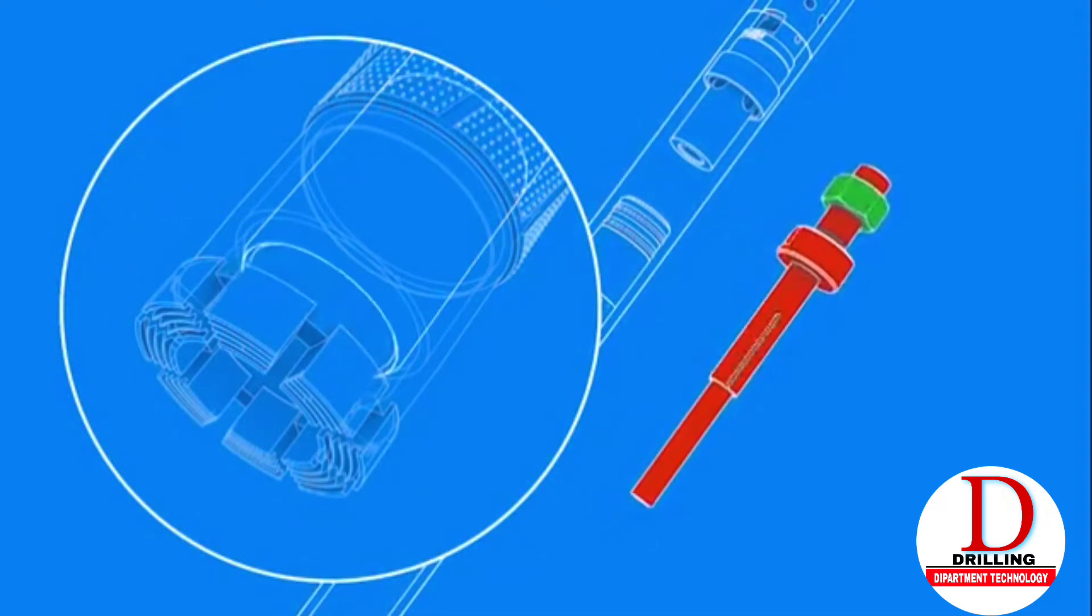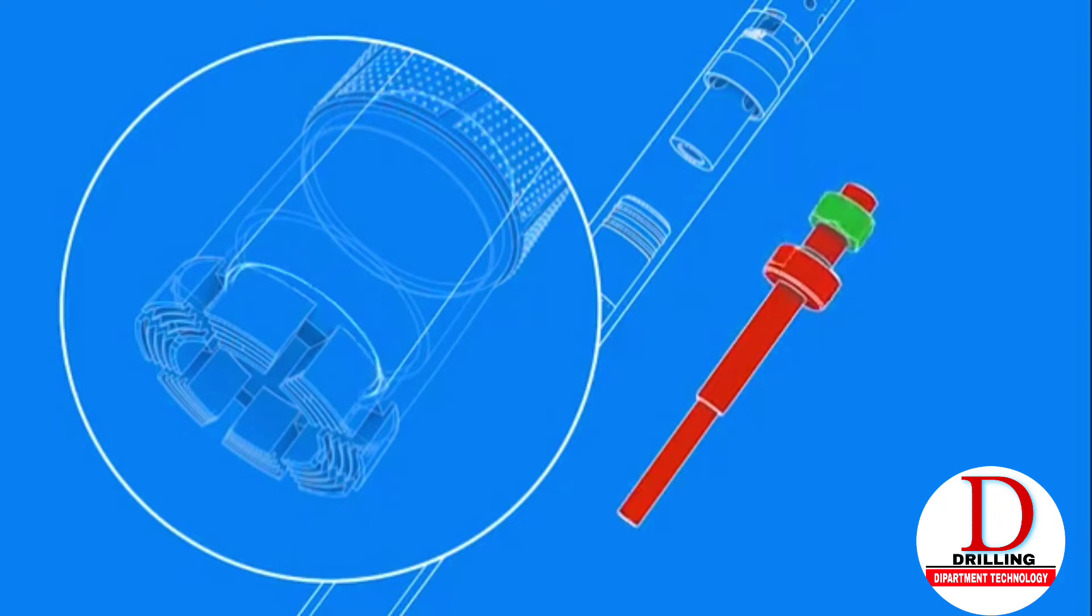For example, in soft and friable formations, the gap needs to be smaller to prevent the drilling fluid from flushing away the core sample.